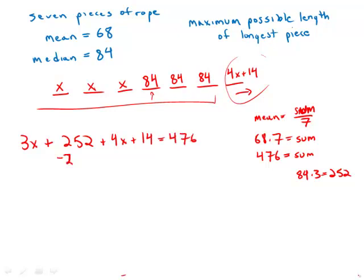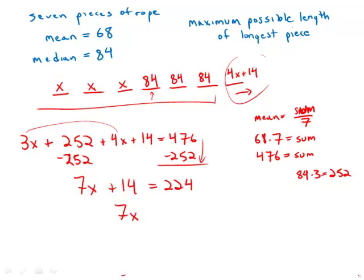The first thing I'll do is just subtract 252 from both sides. And I can combine the 3x and the 4x. So I get 7x plus 14 equals 224, which is the difference I get when I do this subtraction. Then subtract 14. I get 210. Nice round number. Divide by 7. I get x equals 30.